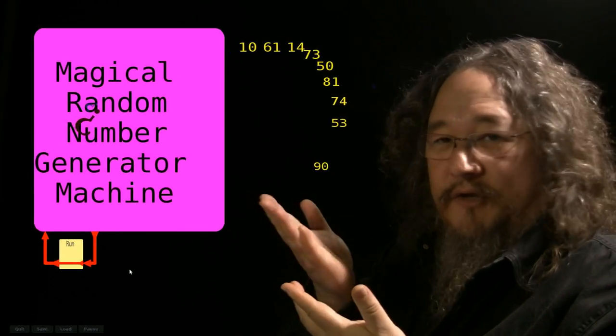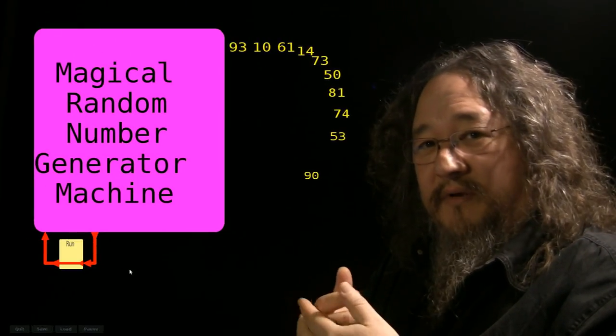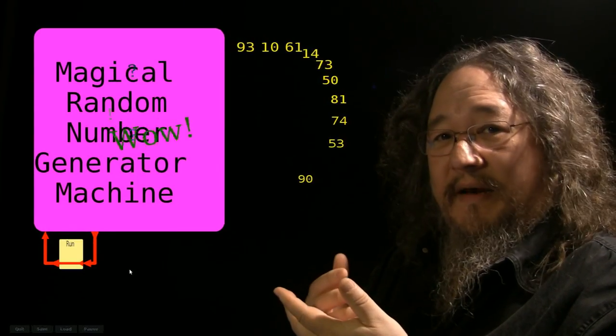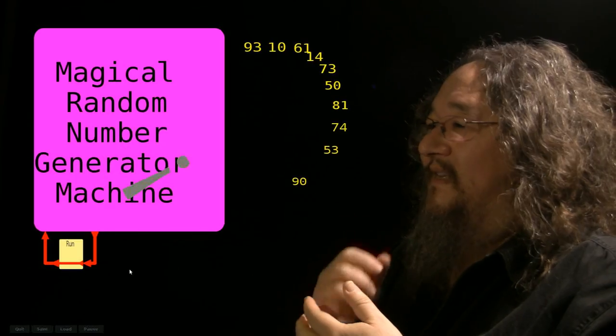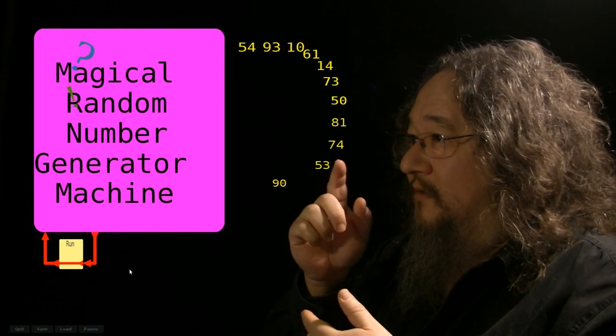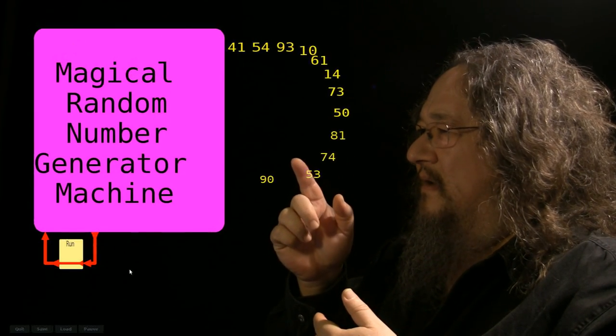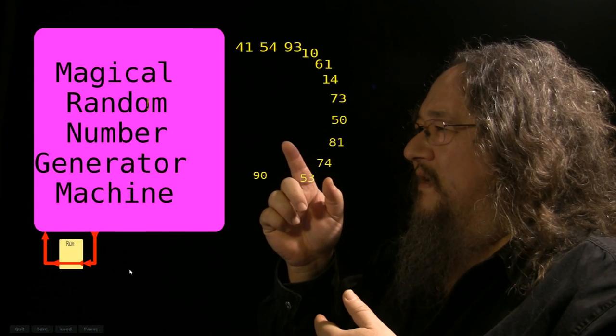I don't have to use the whole number that the thing is giving me. If it's really random, if it's really unpredictable, if it's really got no pattern. Alright, so 90, that's even. That would be heads. Fifty-three, that's odd. That would be tails. So heads, tails, seventy-four is even. Eighty-one is odd. Fifty is even.